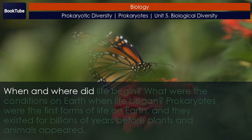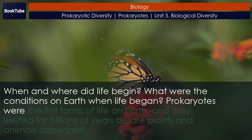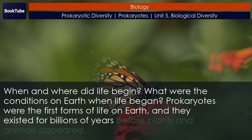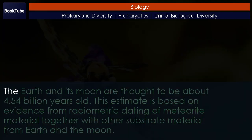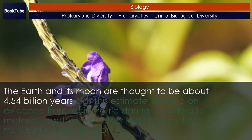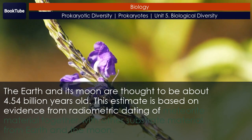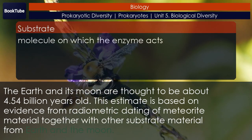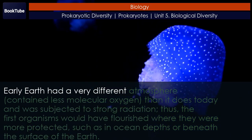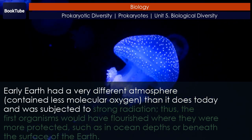When and where did life begin? What were the conditions on Earth when life began? Prokaryotes were the first forms of life on Earth, and they existed for billions of years before plants and animals appeared. The Earth and its moon are thought to be about 4.54 billion years old. This estimate is based on evidence from radiometric dating of meteorite material together with other substrate material from Earth and the moon. Early Earth had a very different atmosphere.